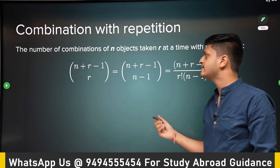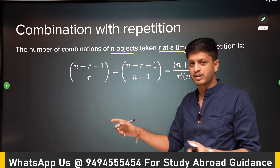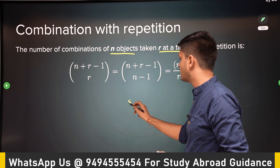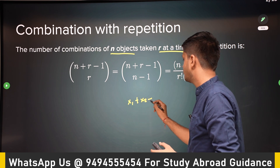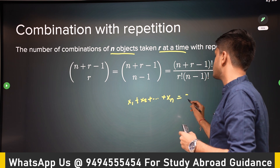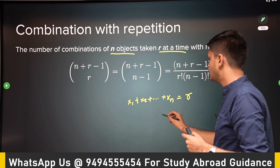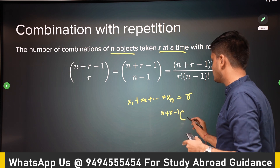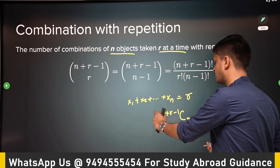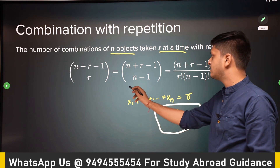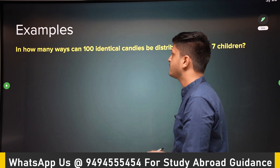The number of combinations of n objects taken r at a time — always map it to an equation. You take x1 of the first object, x2 of the second, and so on up to xn of the nth object, and the total is r. The number of non-negative integral solutions is n+r−1 boxes with n−1 sticks inserted, giving n+r−1 choose r. We've seen this before.